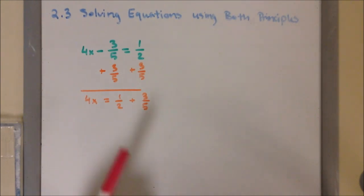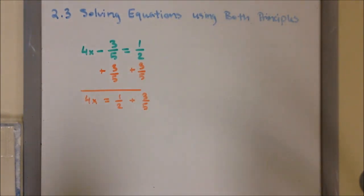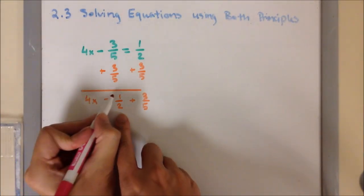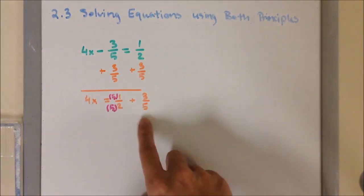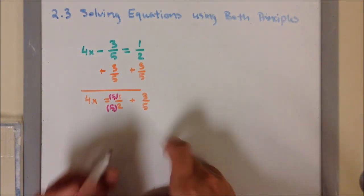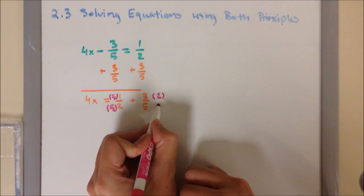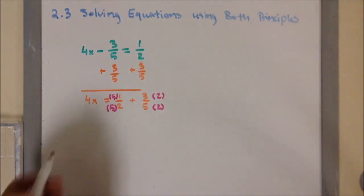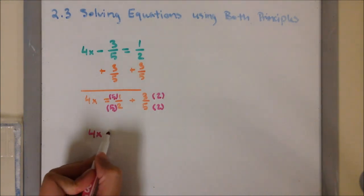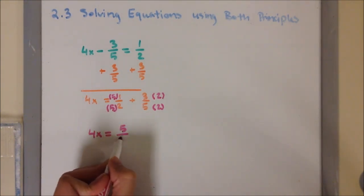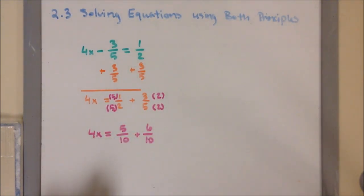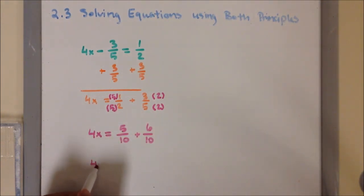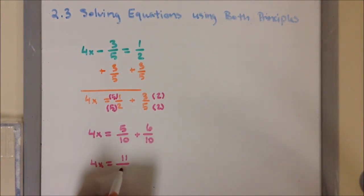The common denominator between 2 and 5 is 10. To change 2 into 10, I'm going to multiply the numerator and denominator by 5. To change 5 into 10, I'm going to multiply the numerator and denominator by 2. So it's going to be 4x equals 5/10 plus 6/10. Then I can combine these two fractions: 4x equals 11 over 10.